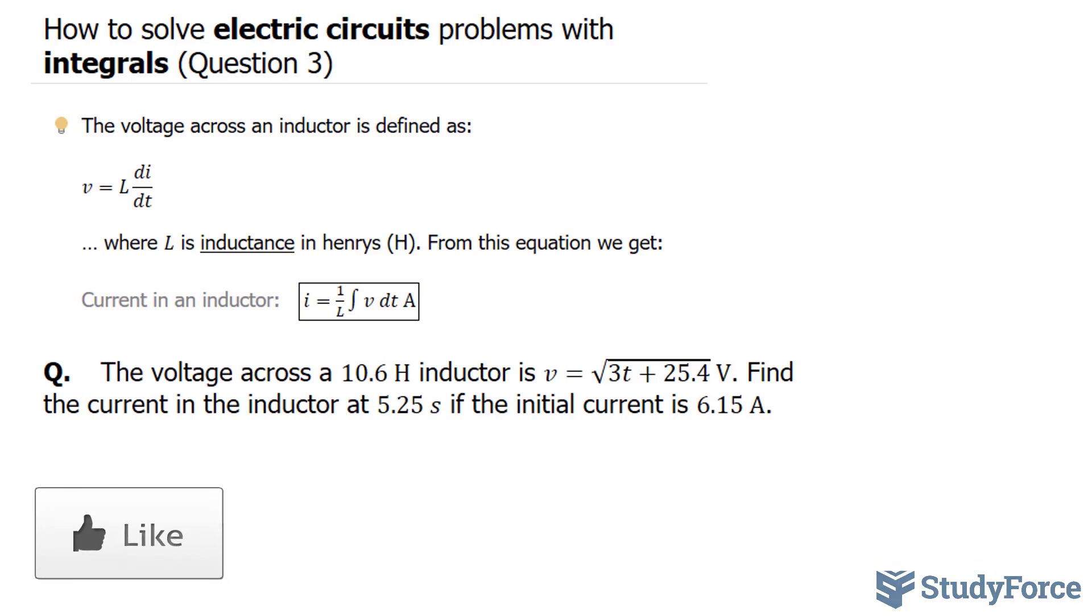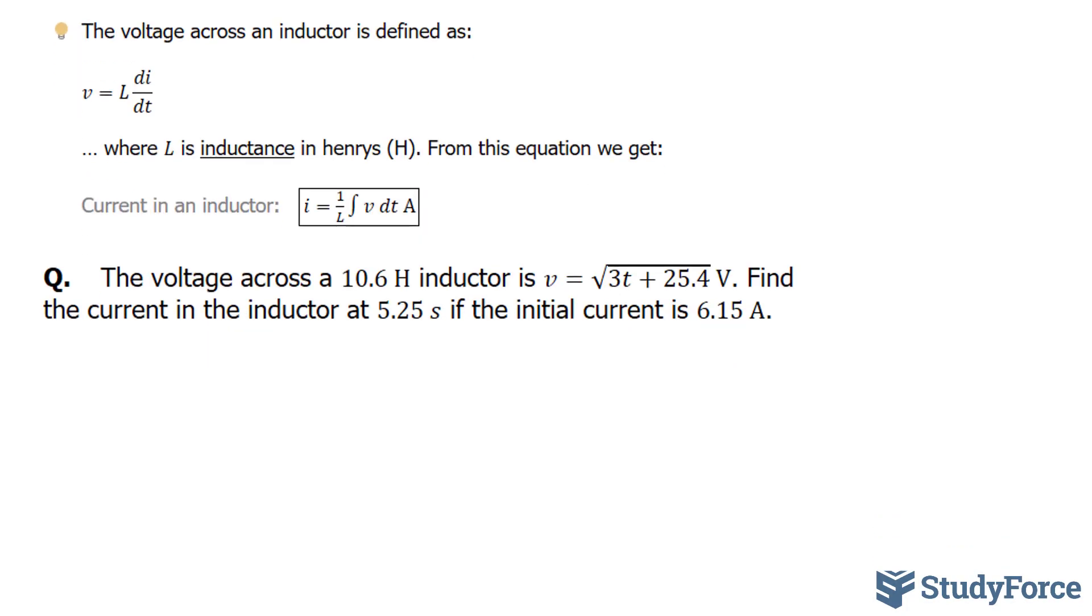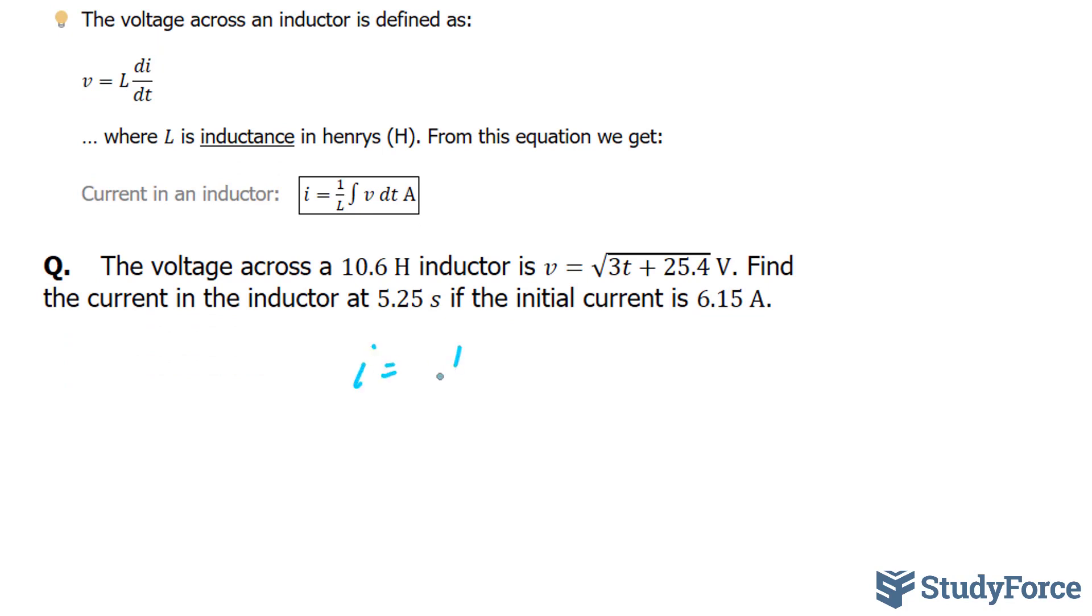The first thing we'll do is use this relationship to find current. So I will take 1 over 10.6, which is the inductance that's given, multiply it by the integral of this function. Here's how to do that. We have current is equal to 1 over 10.6, that's this part, the integral of 3t plus 25.4 square rooted dt.